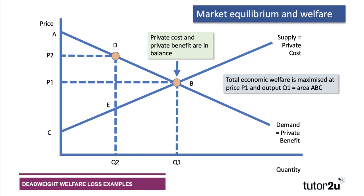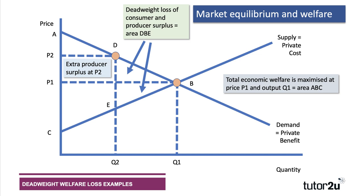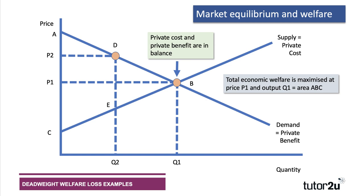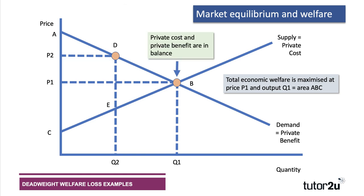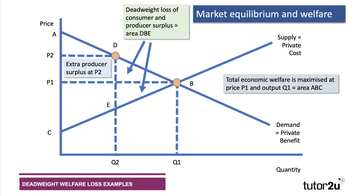What about the welfare loss here? I've added points D and E to the diagram. At price P2, there is some extra producer surplus. If we raise the price from P1 to P2, the producer gets some extra producer surplus. But crucially, consumer surplus goes down to area ADP2. There's an area DBE which is a loss of welfare — a loss of producer surplus and a loss of consumer surplus — and that is therefore a deadweight loss. Comparing where the market was in balance and equilibrium, the total welfare was ABC. Now the total welfare is ADEC, which means we have a deadweight welfare loss equal to area DBE, because the market is not in an equilibrium position.